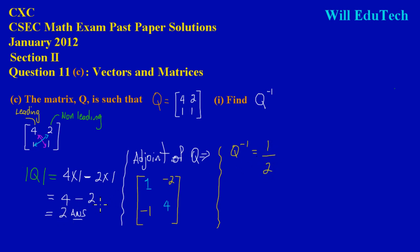So I just simply took my determinant, placed 1 above it, and I'm going to multiply that by the adjoint. So the adjoint we had here—our adjoint we had 1, negative 2, negative 1, 4. So that's the inverse of Q.